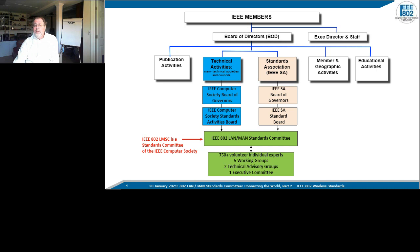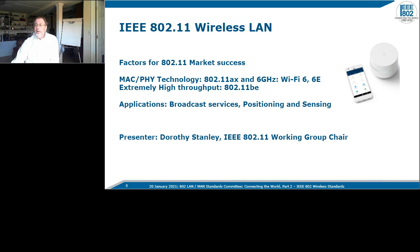To show where 802 fits in IEEE overall: IEEE has north of 400,000 members and is broken into five major organizational units, of which technical activities and standards are two major ones. The Computer Society is in technical activities. The IEEE 802 LAN/MAN Standards Committee has responsibilities in both technical activities and the standards association. The standards association identifies policies and procedures under which standards development occurs, ensuring it's done in a fair, open, transparent manner so anyone with interest can participate.